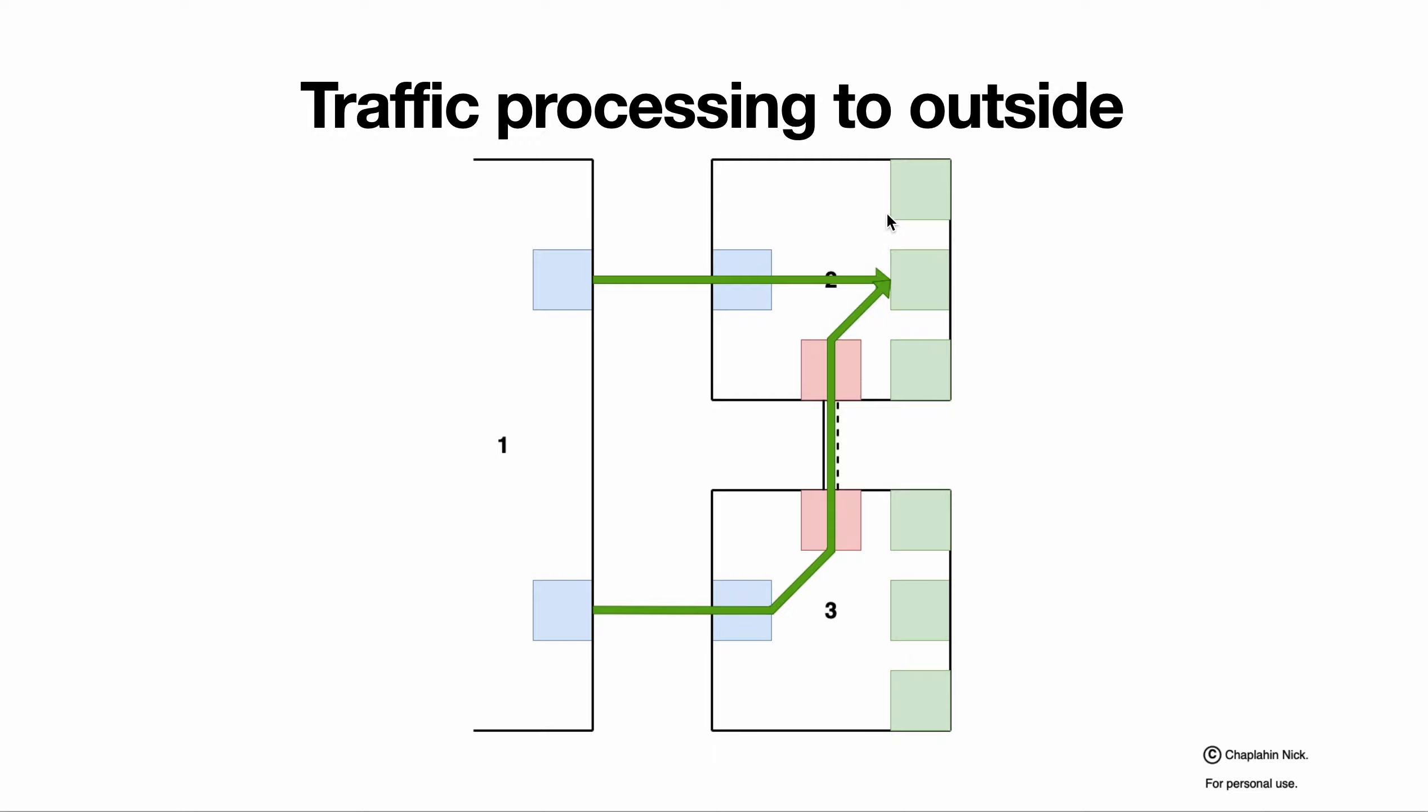Schematically, we can present it like that. This is true for both sides. So we have full connectivity and we have controlled interconnection between segments that we see, we know, and we have influence on.